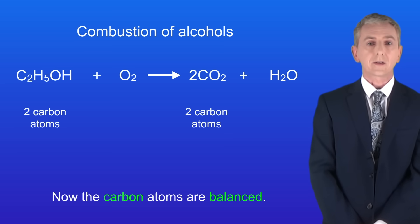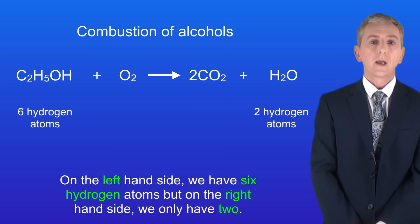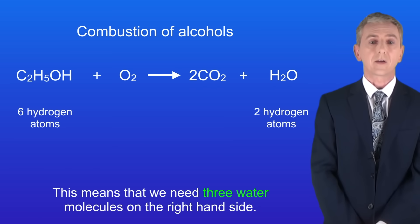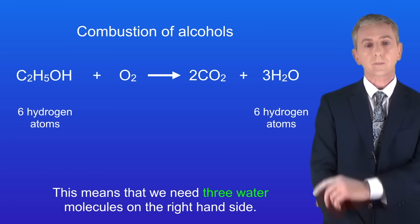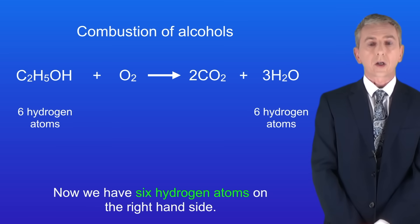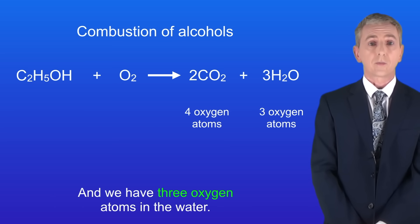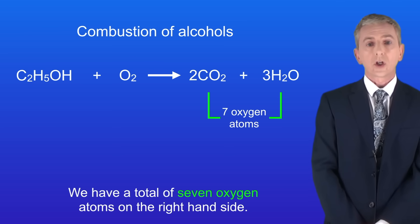Next we balance the hydrogen atoms. On the left hand side we've got six hydrogen atoms, but on the right hand side we've only got two. This means that we need three water molecules on the right hand side. Now we have six hydrogen atoms on the right hand side. So now that we've balanced the carbon and the hydrogen atoms we can balance the oxygen atoms. On the right hand side we've got four oxygen atoms in the carbon dioxide and three oxygen atoms in the water, giving a total of seven oxygen atoms on the right hand side.